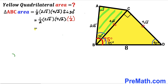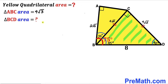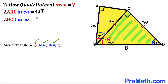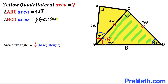Multiplying and simplifying everything, the area of triangle ABC turns out to be 4√3. Now for the area of right triangle BCD, we use Area = ½ × base × height. The base is 4√2 and the height is 4√2 as well. So the area of triangle BCD = ½ × 4√2 × 4√2, which gives us 16.